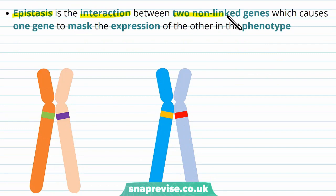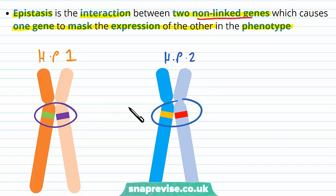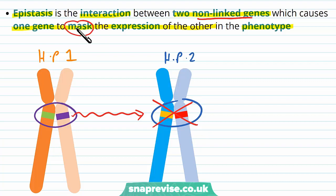Epistasis is the name of the interaction between two non-linked genes — so two genes on separate chromosomes — which causes one gene to mask the expression of the other in the phenotype. Non-linked means these two genes are not on the same chromosome at all, and sometimes one gene can mask or cover up the expression of the other, stopping it from ever being expressed so that phenotype would never exist.